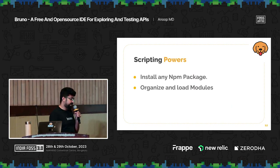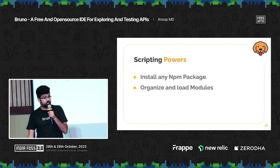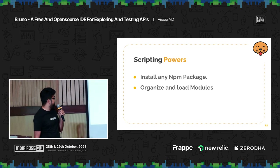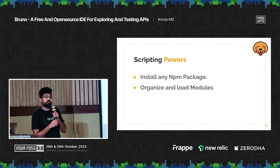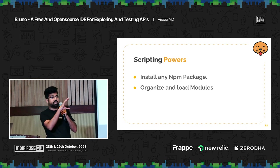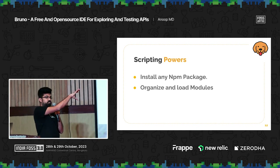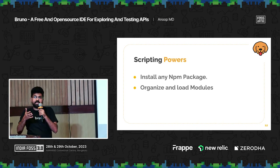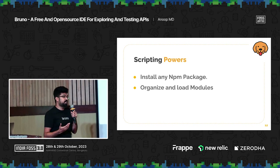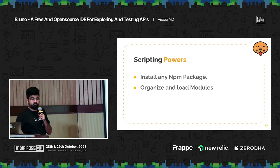Scripting powers — this is something that's unlike any other API client. You can install any NPM package of your choice. You can organize in your collection just like code: create a lib folder or tools folder, put your common logic there, use VS Code to edit it, and import it inside your collection script. This level of support is not available in any other client, and it's only possible because of our architecture and local-first approach.